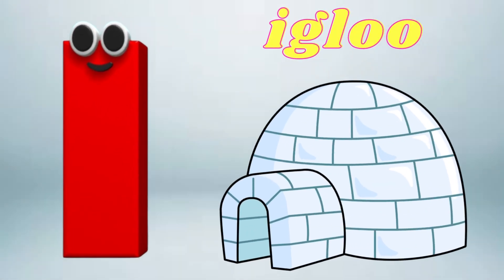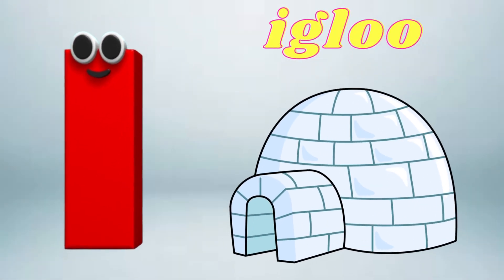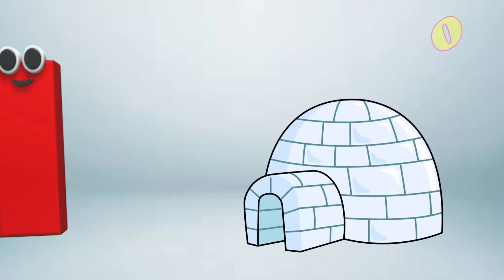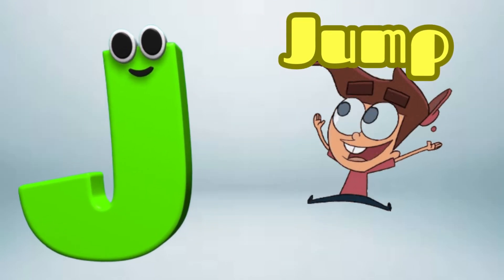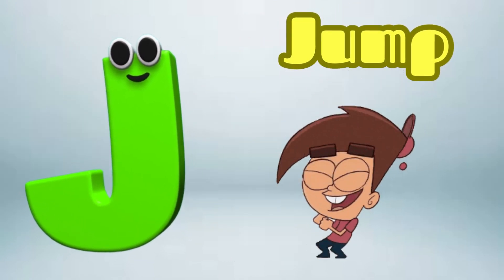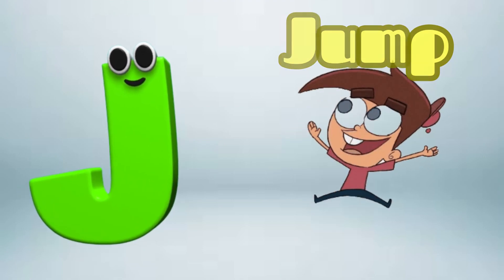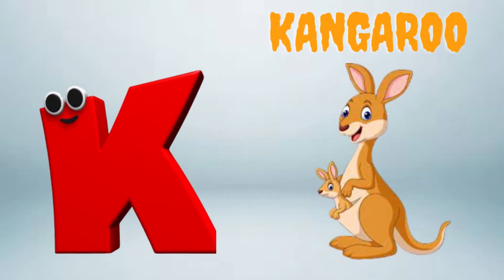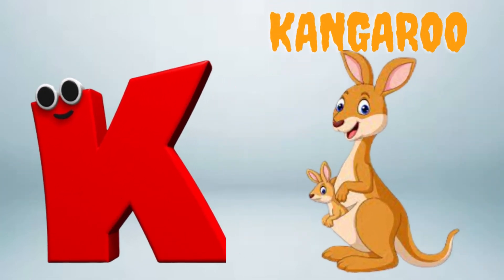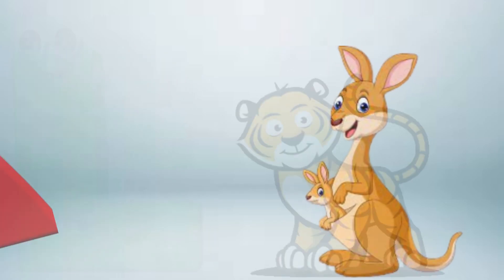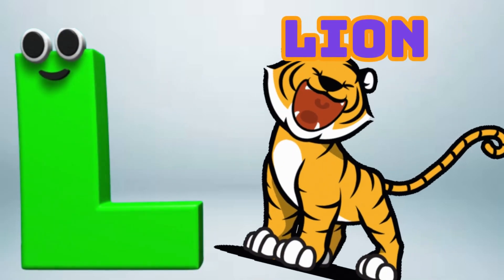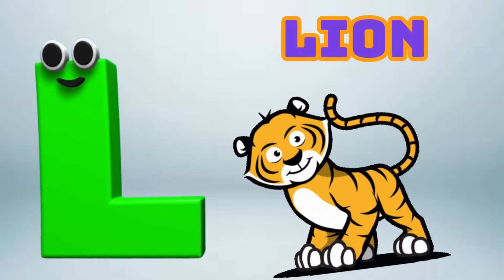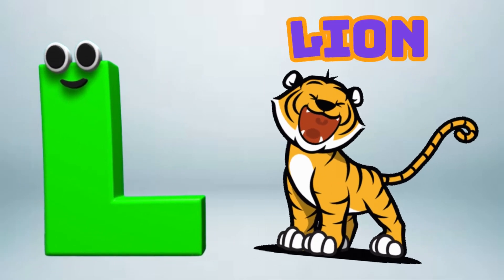I is for Igloo, I-I-Igloo. J is for Jump, J-J-Jump. K is for Kangaroo, K-K-Kangaroo. L is for Lion, L-L-Lion.